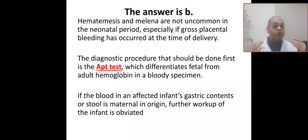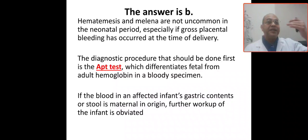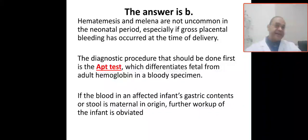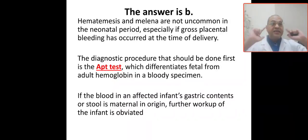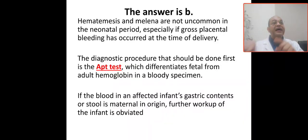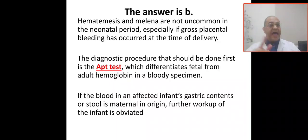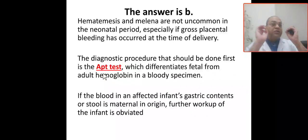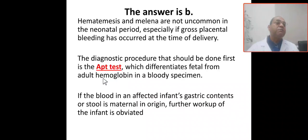The answer is B — you have to do the Apt test. Hematemesis or melena are not uncommon in the neonatal period, especially if gross placental bleeding has occurred at the time of delivery. Once you hear placental abruption or marginal placental separation, keep in mind the baby may need resuscitation and shock therapy, or may have swallowed maternal blood resulting in meleana neonatorum. The Apt test differentiates fetal from adult hemoglobin in the bloody specimen.